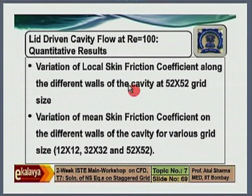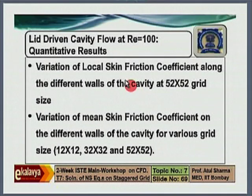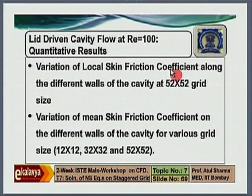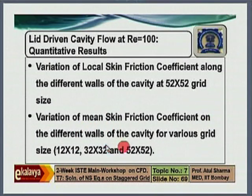The change should be monotonic and it should asymptote. CFD has two types of analysis: qualitative analysis and quantitative analysis. Qualitative analysis uses pictures or movies of the flow field. Quantitative analysis discusses engineering parameters. In this case, the engineering parameter is variation of skin friction coefficient. Skin friction coefficient is non-dimensional wall shear stress expressed as tau_w divided by half rho u0 squared, where u0 is the lid velocity. Variation of local skin friction coefficient along the different walls of the cavity at a 52×52 grid is shown, along with the variation of mean skin friction coefficient on different walls.